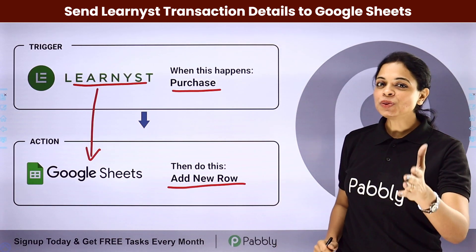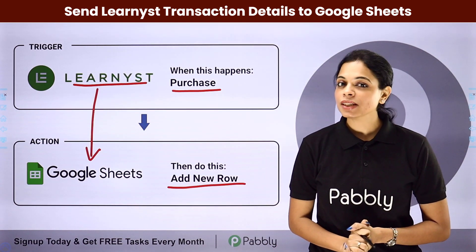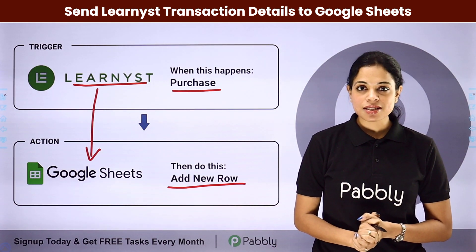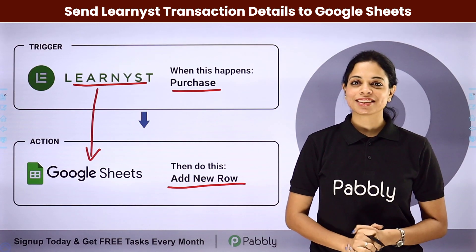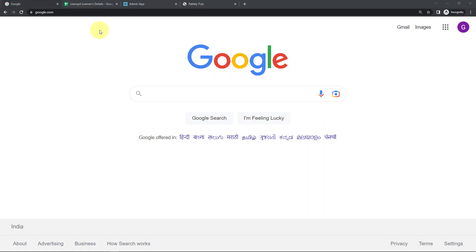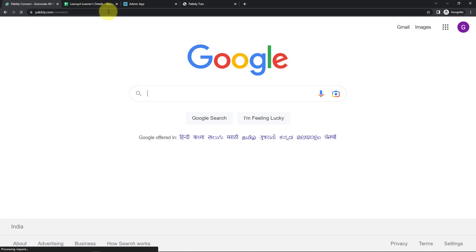How can you integrate and automate this entire process? To understand that, let me take you to my screen. To begin with, we are first going to type the URL pabbly.com/connect.